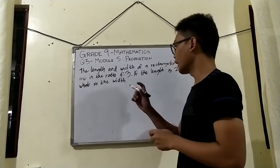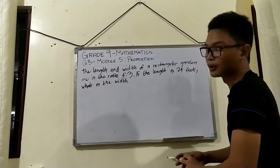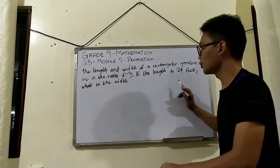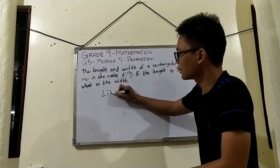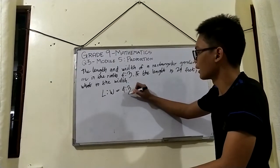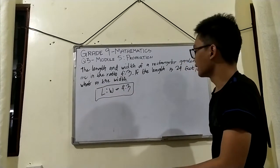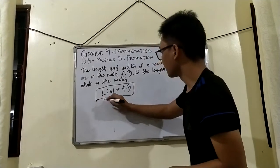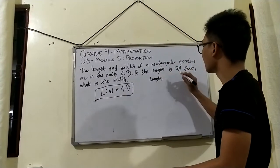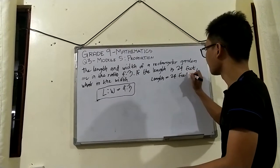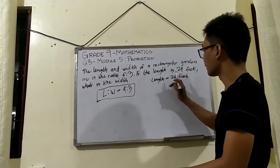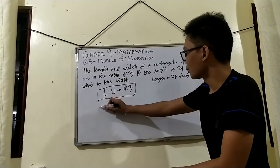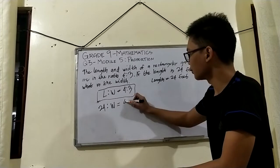Our next problem: the length and width of a rectangular garden are in the ratio of 4 is to 3. If the length is 24 feet, what is the width? It is said that the ratio of length to width is 4 is to 3. Since the length is given as 24 feet, we substitute: 24 is to W equals 4 is to 3.